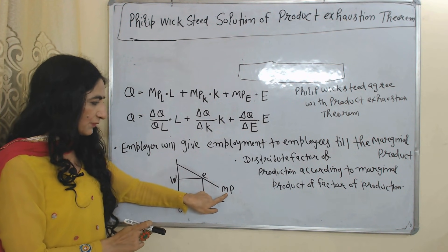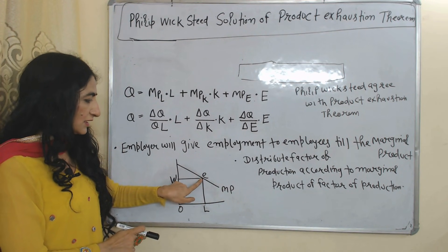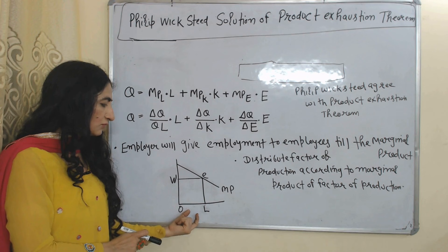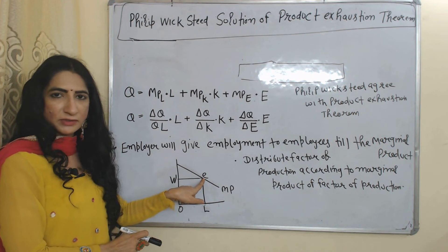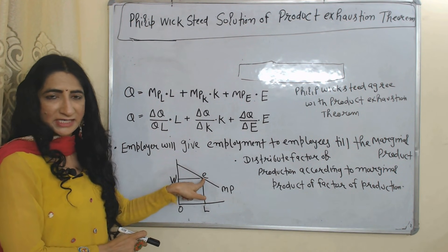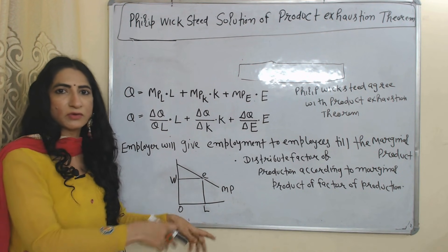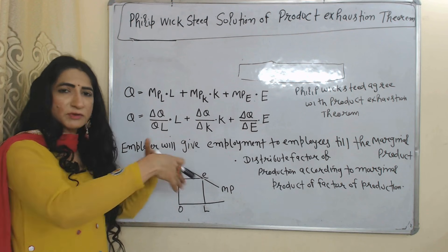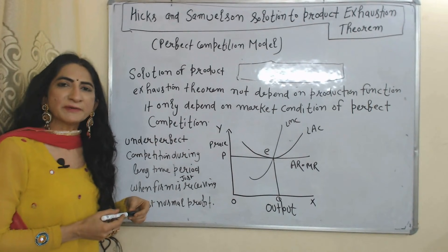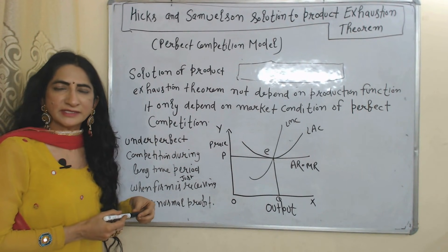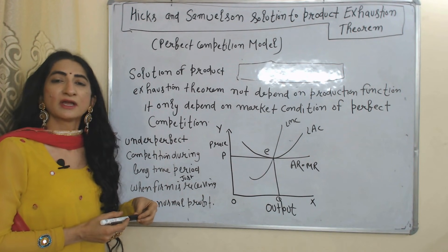At point E, you can see that at OL amount of labor, marginal product of labor becomes equal to wages. That is why the employer should employ only OL amount of labor and not beyond this. They should distribute rewards to factors of production according to their marginal product.